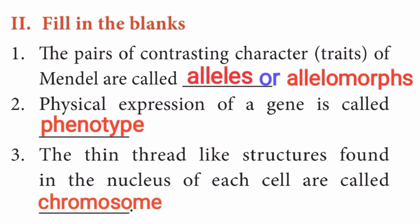Second row: fill in the blanks. First question: the pairs of contrasting characters, that is traits, of Mendel are called dash. Answer is: alleles or allelomorphs. In Mendel's experiments, the contrasting trait pairs are called alleles or allelomorphs.